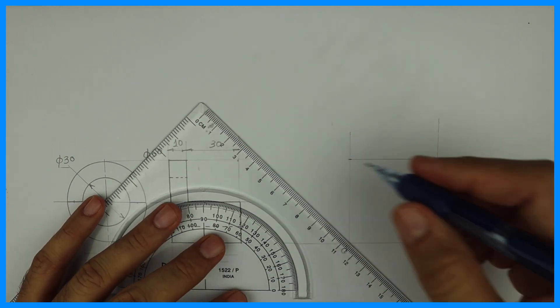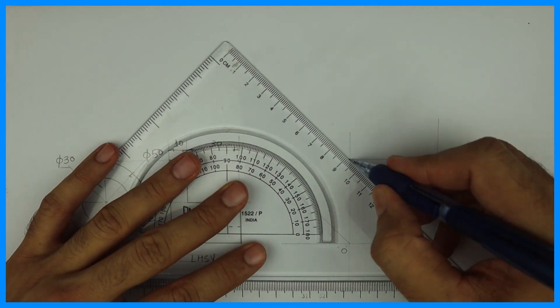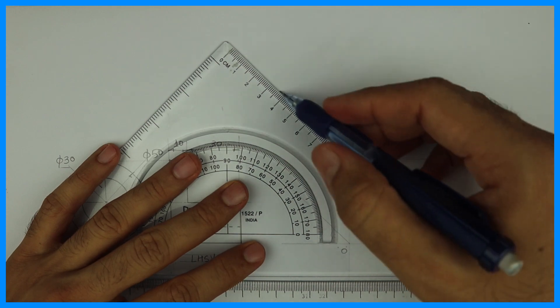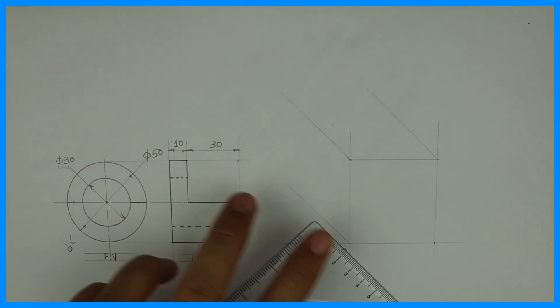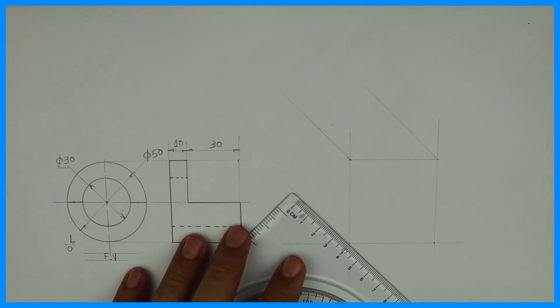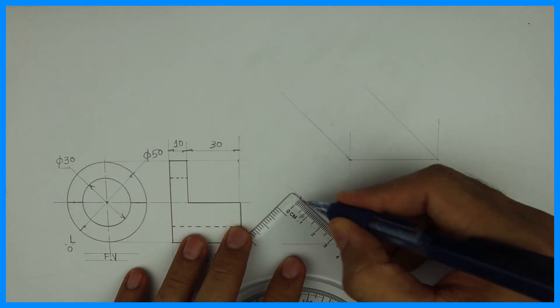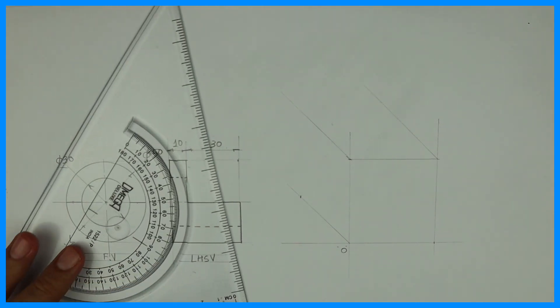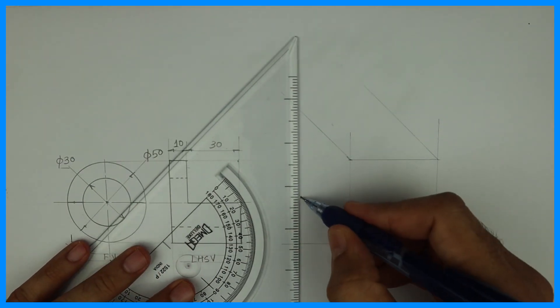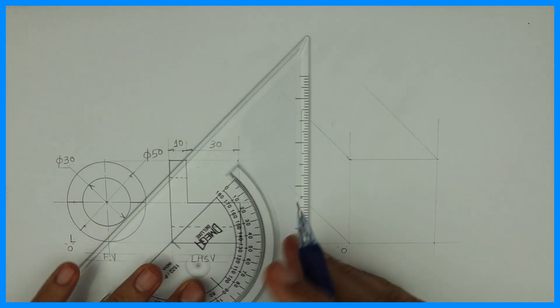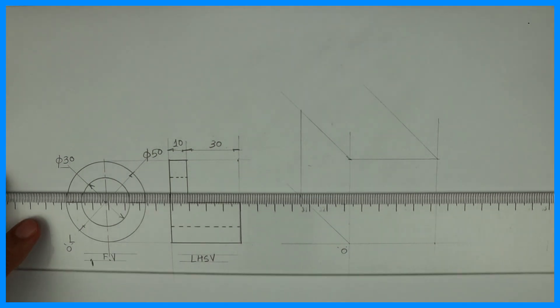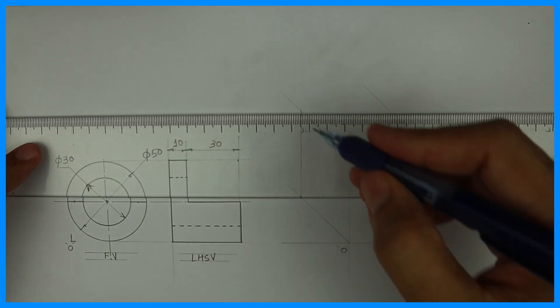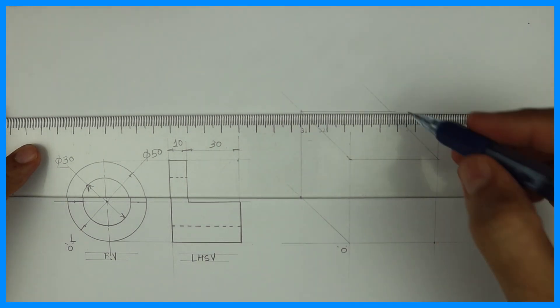So we'll take 45 degrees. Remember that we are taking receding angle at 45 degrees. You can take 30 or 60 degrees also, it depends upon the question. So I'm taking 45 degrees and then you mark 40 on that and you complete the box. If they haven't mentioned anything in the exam, you can take receding angle 45 degrees.